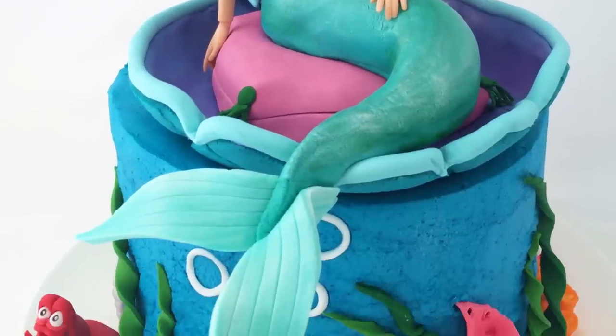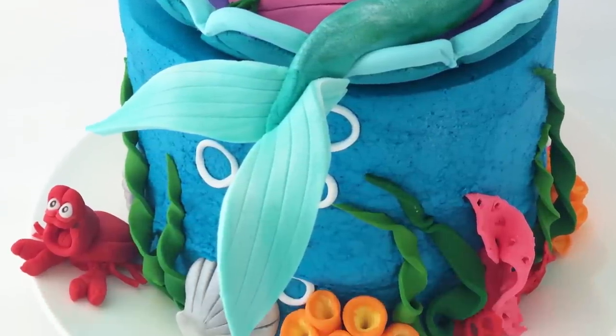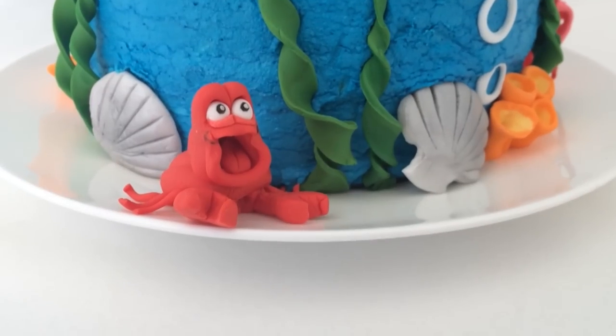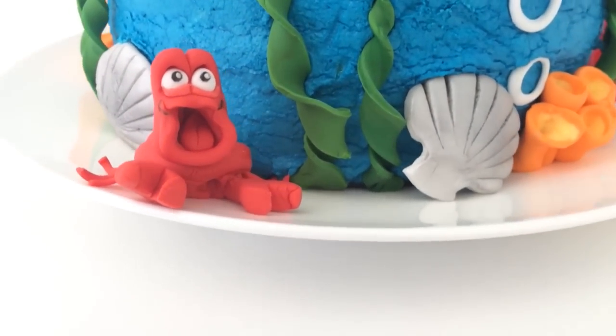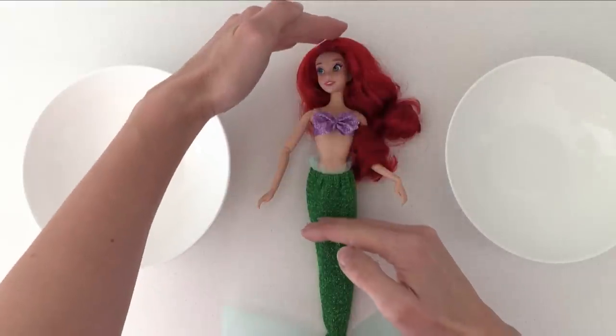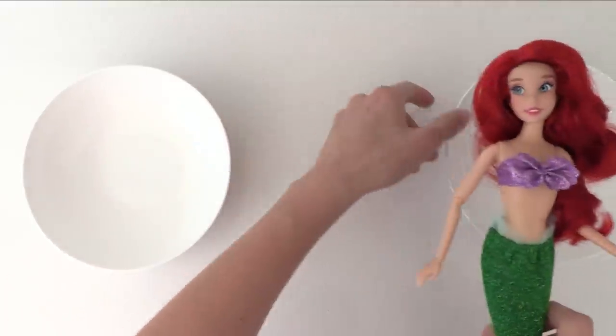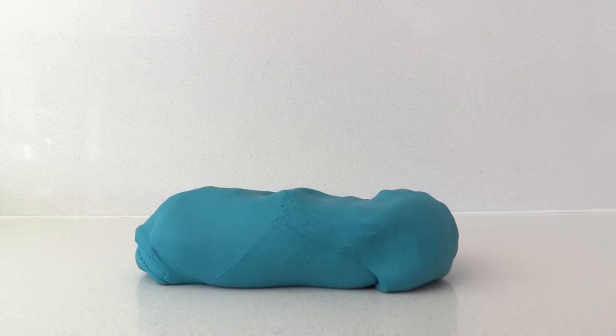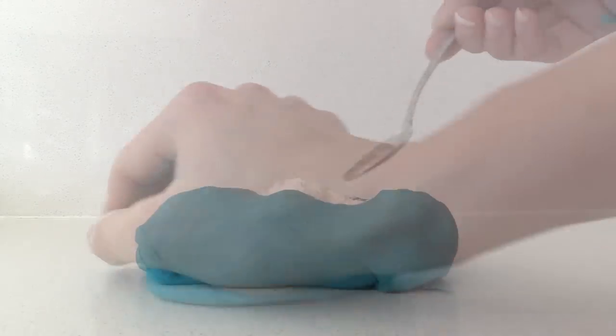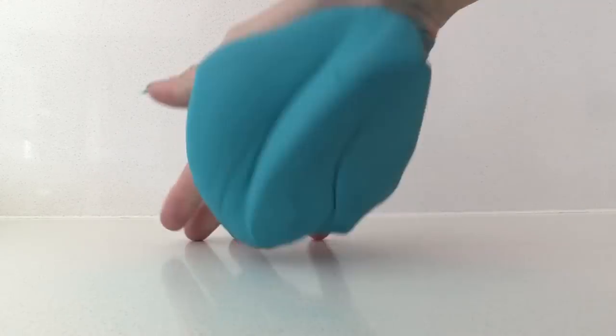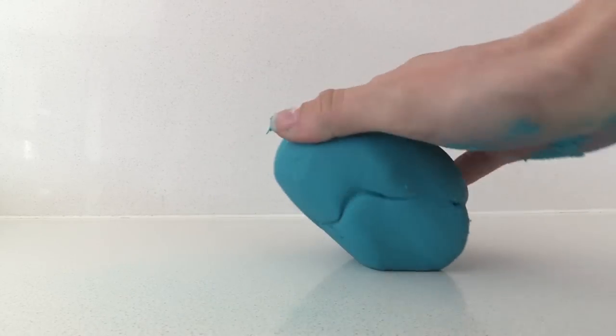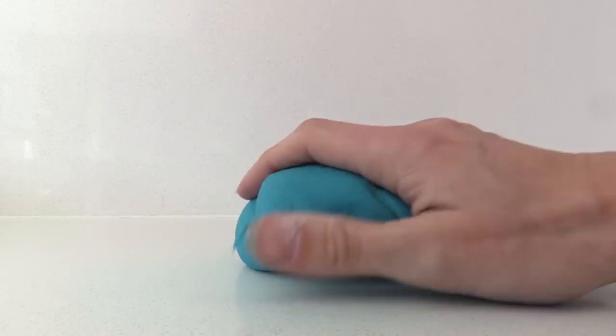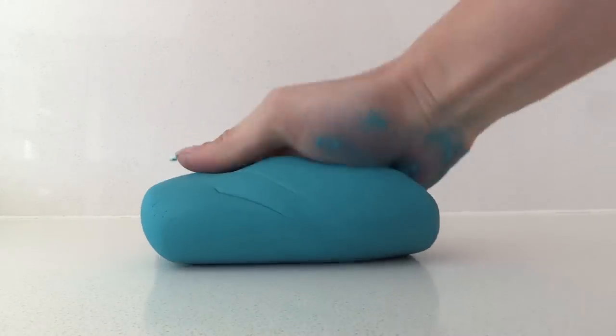The first thing you need to do is make some fondant details ahead of time. To make the shell, find two bowls that are the height of the torso of your doll and line them with non-stick baking paper. Take some bluey-green fondant and knead in some Tylose powder. This helps the fondant dry out faster, so once you've added it you need to work fairly quickly.